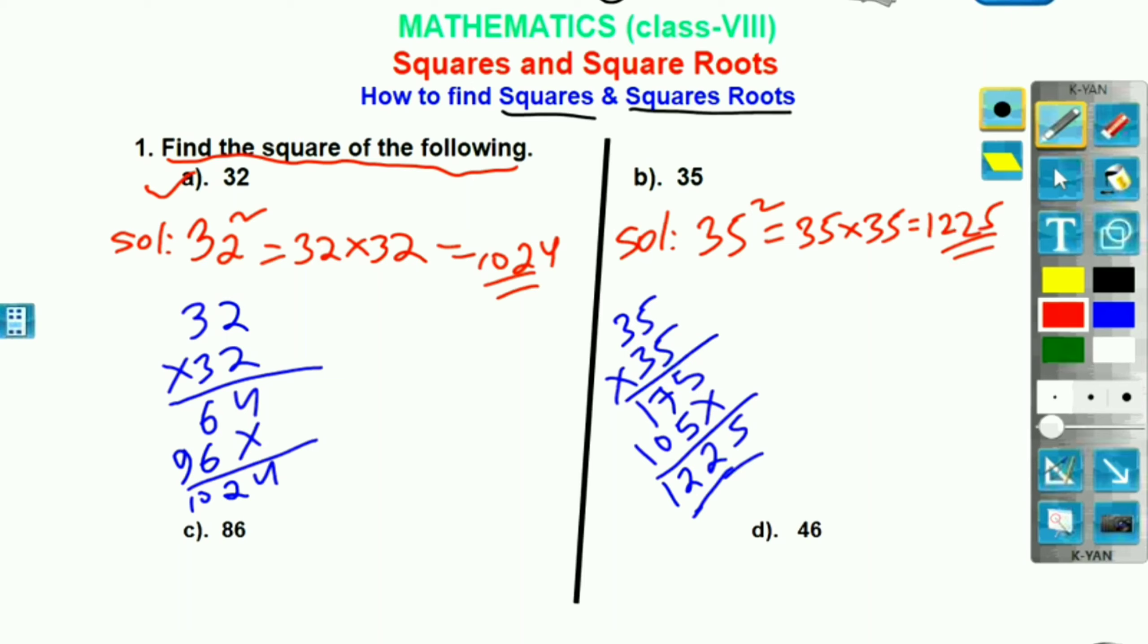In this way, we can find the square. In this way, we can find C and D square also. You can see.